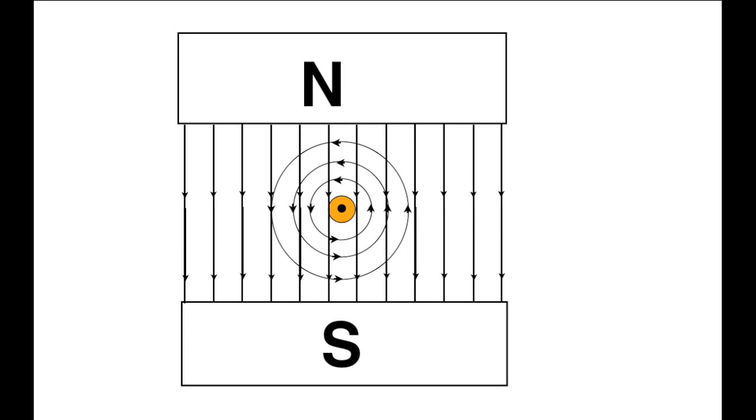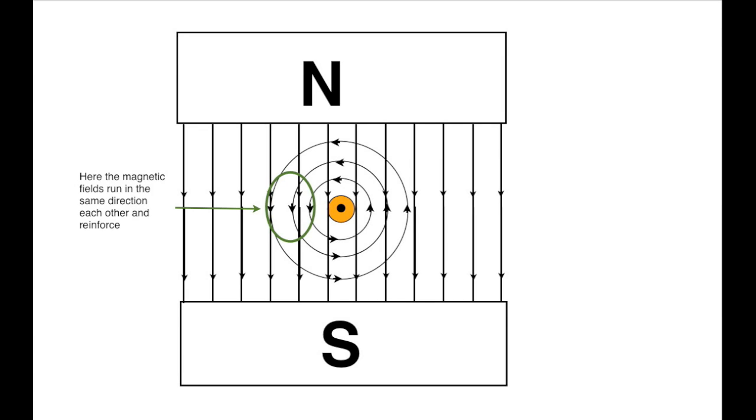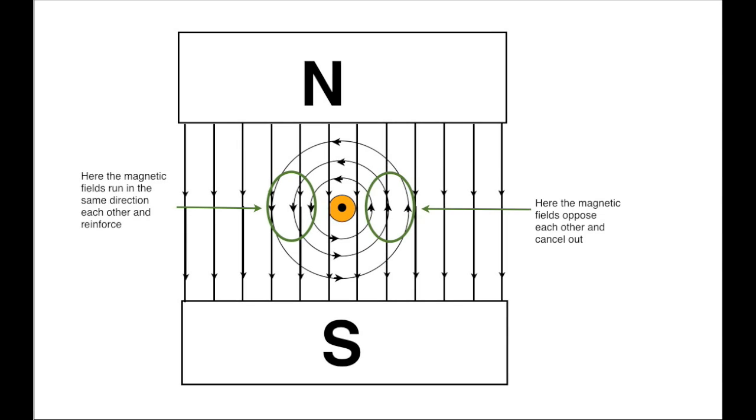The field between the poles of the magnet runs from north to south. The fields between the two magnets interact. On the left, they both run in the same direction and reinforce one another. On the right, they run in opposite directions and tend to cancel out.